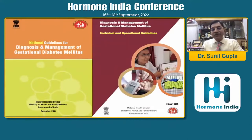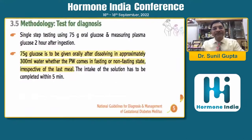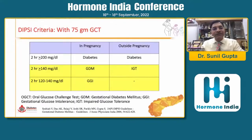We have Government of India guidelines published in 2014 and 2018 for management of diabetes. They recommend that 75 gram glucose be given orally, irrespective of the time of the meal — fasting or non-fasting — and a two-hour test be taken. If it is more than 140, we call it GDM. If it is less than 140, it is normal.